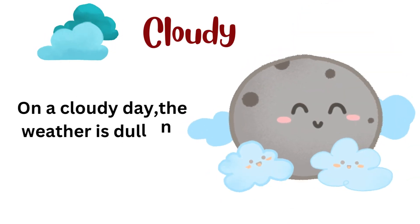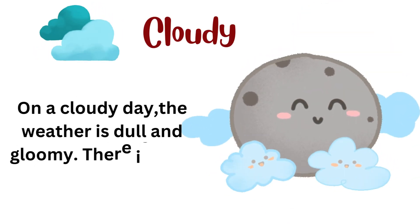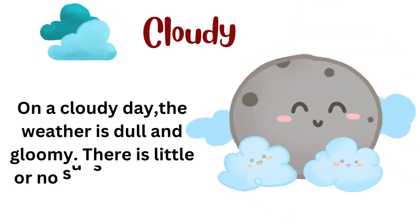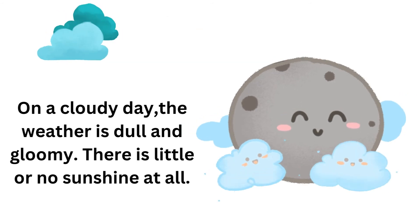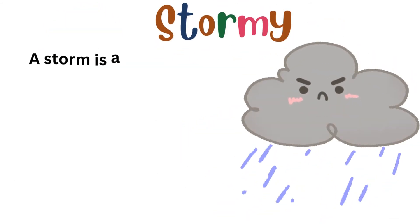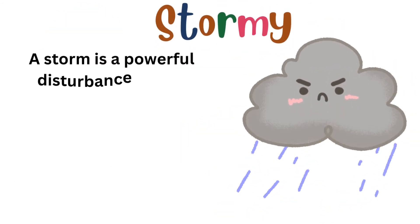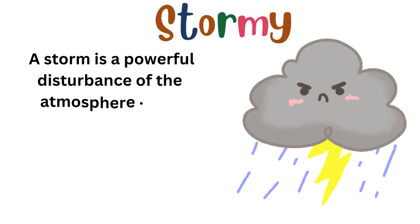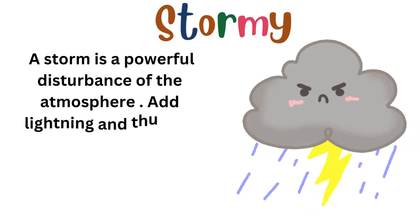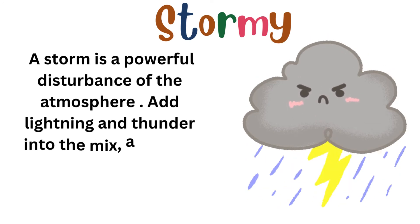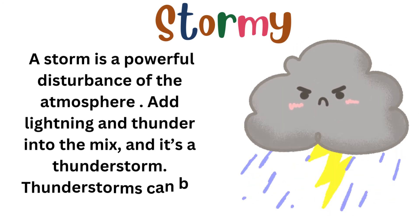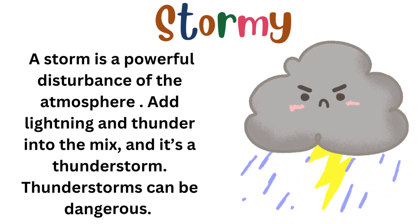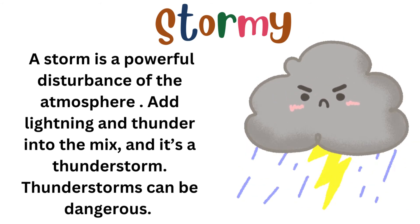Cloudy weather: on a cloudy day the weather is dull and gloomy, with little or no sunshine at all. Stormy weather: a storm is a powerful disturbance of the atmosphere. Add lightning and thunder into the mix and it's a thunderstorm.